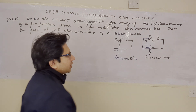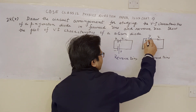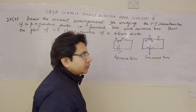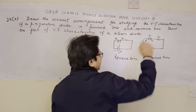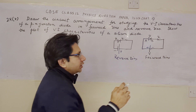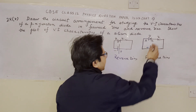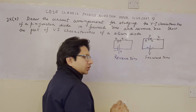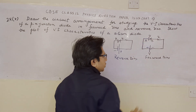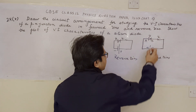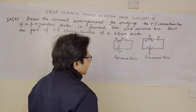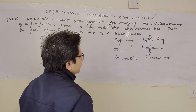In the forward bias arrangement, for the ideal diode this particular path has minimum resistance — we can say it is almost a short circuit. For a practical diode we can replace it with a battery as well as its internal resistance, but for the ideal diode we can replace it with a short circuit. So when the diode is in forward bias condition it shows very low resistance.